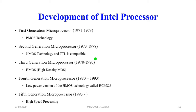The fifth generation microprocessor started from 1993 onward, featuring very high-speed processing. Now we are going to discuss which processors come under each generation — from the first generation through to the fifth generation.